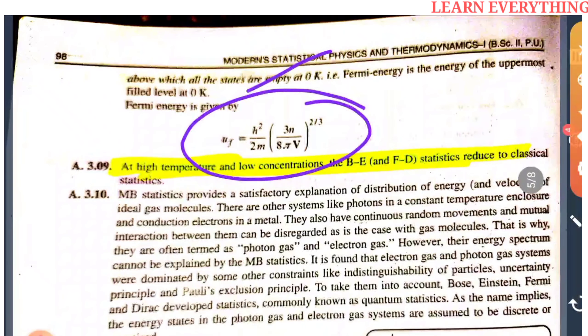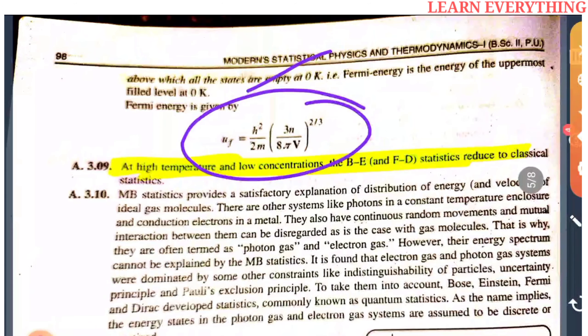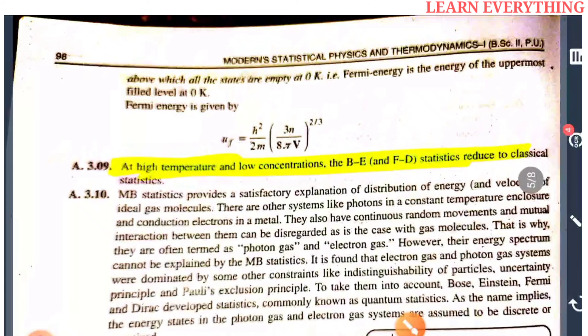The Fermi energy is defined as the energy of the uppermost filled level at 0 Kelvin. The formula is: UF = (h²/2m) × (3N/8πV)^(2/3). This formula is important for exam questions.